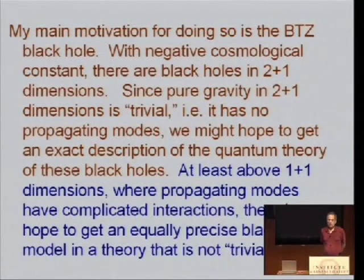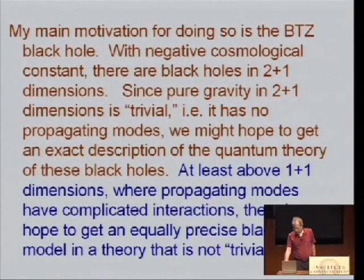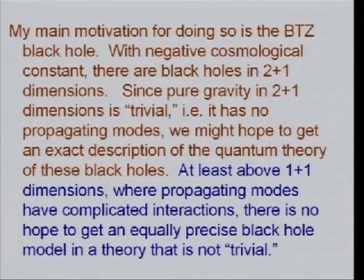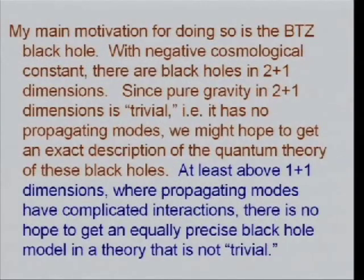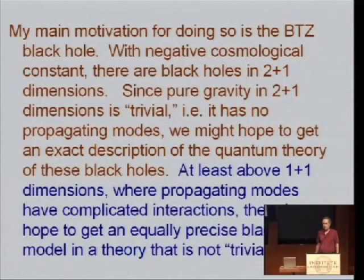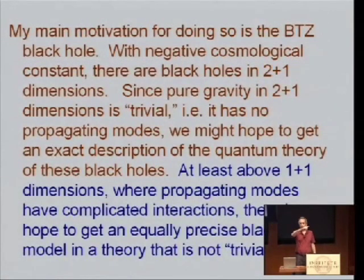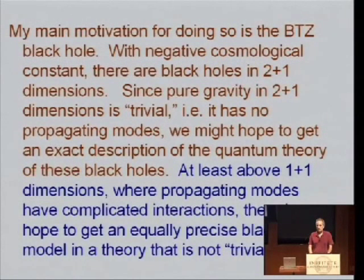In 4 dimensions, it's hopeless to get a precise description of quantum mechanics with a black hole because the phenomena are far too complicated. But in 3 dimensions, you could at least possibly get a precise black hole model. You might also conceivably do it in 1+1 dimensions, but that's less realistic because the black hole horizon only consists of 2 points, and the basic property of Bekenstein-Hawking entropy proportional to the area or perimeter of the horizon is lost. In 2+1 dimensions, there are black holes with a perimeter and a Bekenstein-Hawking entropy proportional to the length of the perimeter — a much more realistic model, if you could solve it.